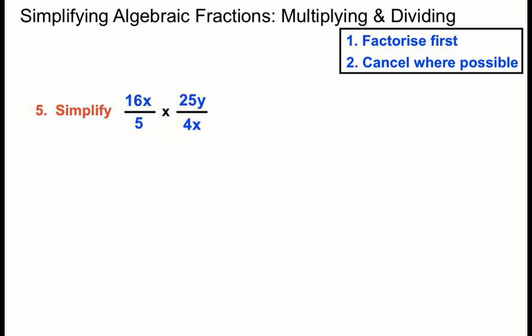Okay, here nothing to factorise really, but we can do a lot of cancelling out. 5 goes into the bottom once and into 25 five times. 4 goes into the 4 once and into the 16 four times. x goes into itself once and into the other x once.